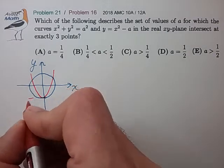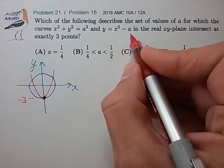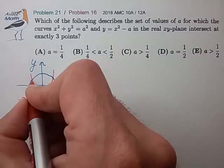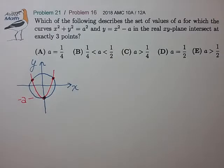So these are always going to intersect at minus a, and we're looking for the condition on a such that we can get two additional intersection points here and here. Okay, so I think I understand this.